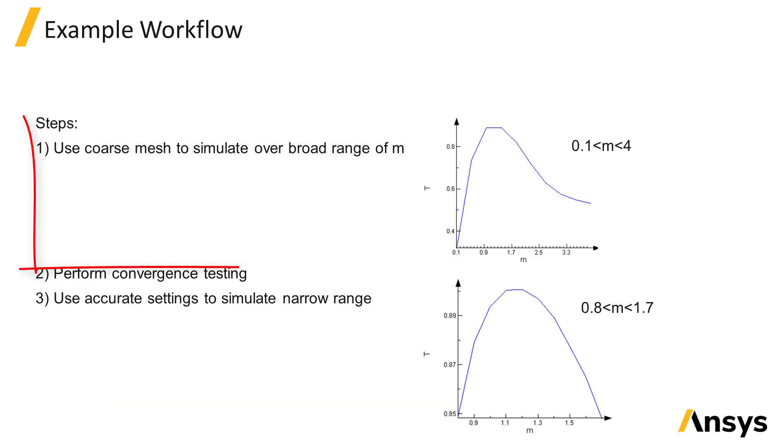We can start by using a coarse mesh and sweeping over a large range of values of m to get a rough idea of the range where the transmission is maximized. This allows us to narrow down the range of m to sweep to get the final results.